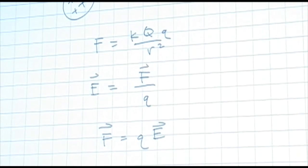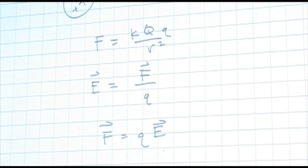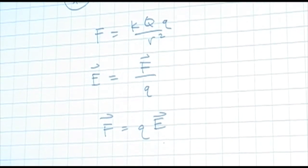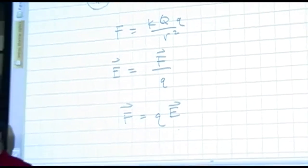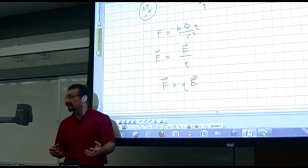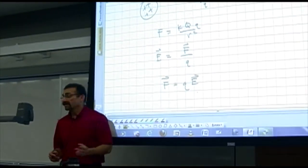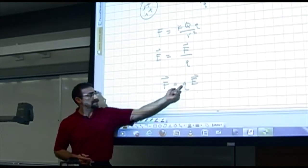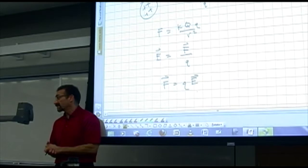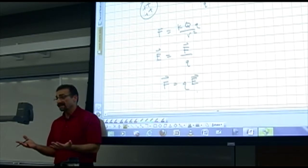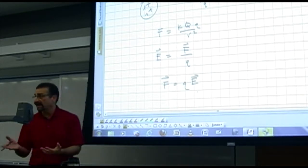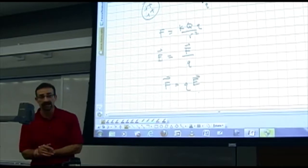This is a vector equation. If Q is positive, F and E point in the same direction — the electric field points the direction a positive charge would go if placed there. If Q is negative, it flips the vector by 180 degrees. That's what a negative sign does to a vector quantity: the magnitude stays the same, but the direction switches 180 degrees.